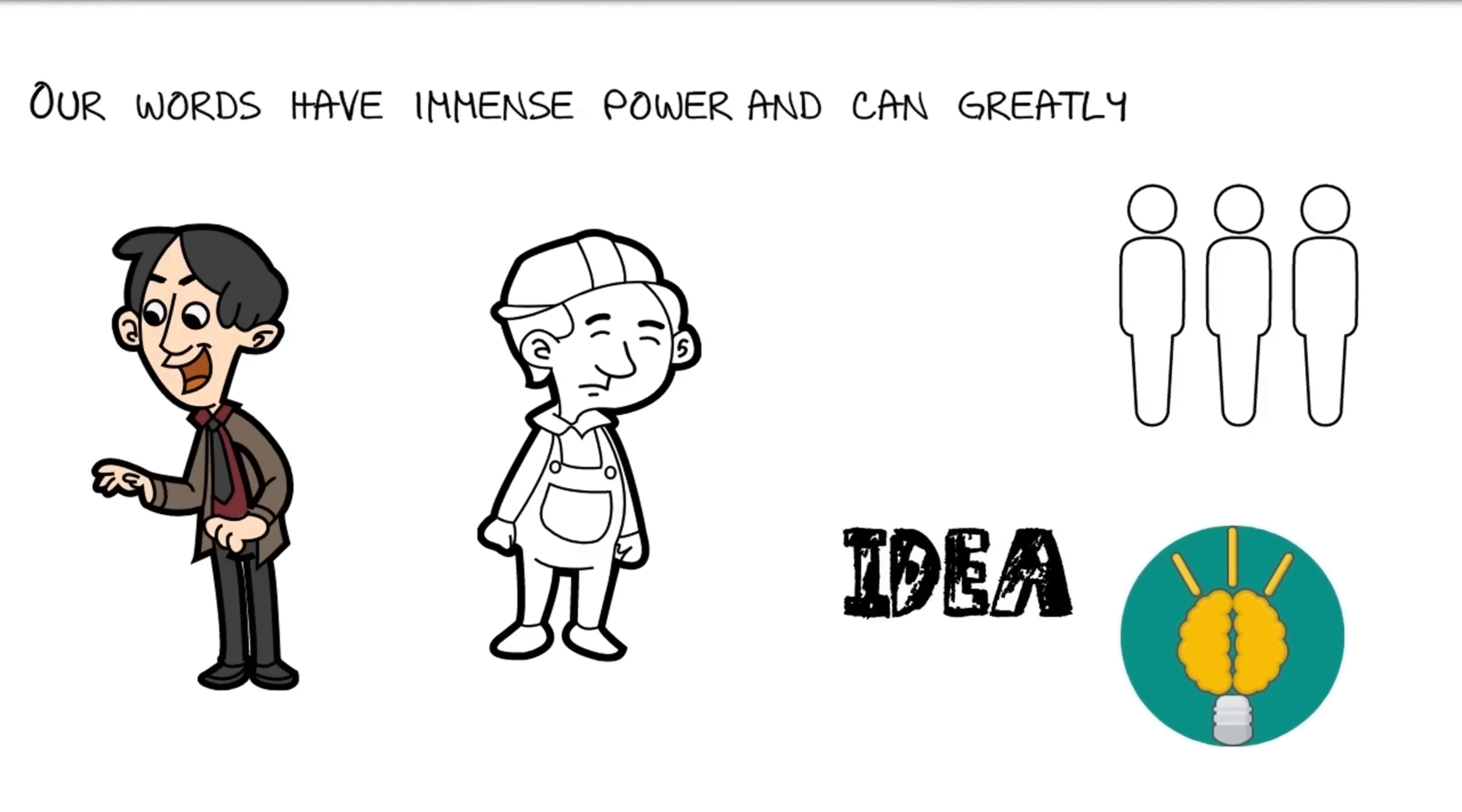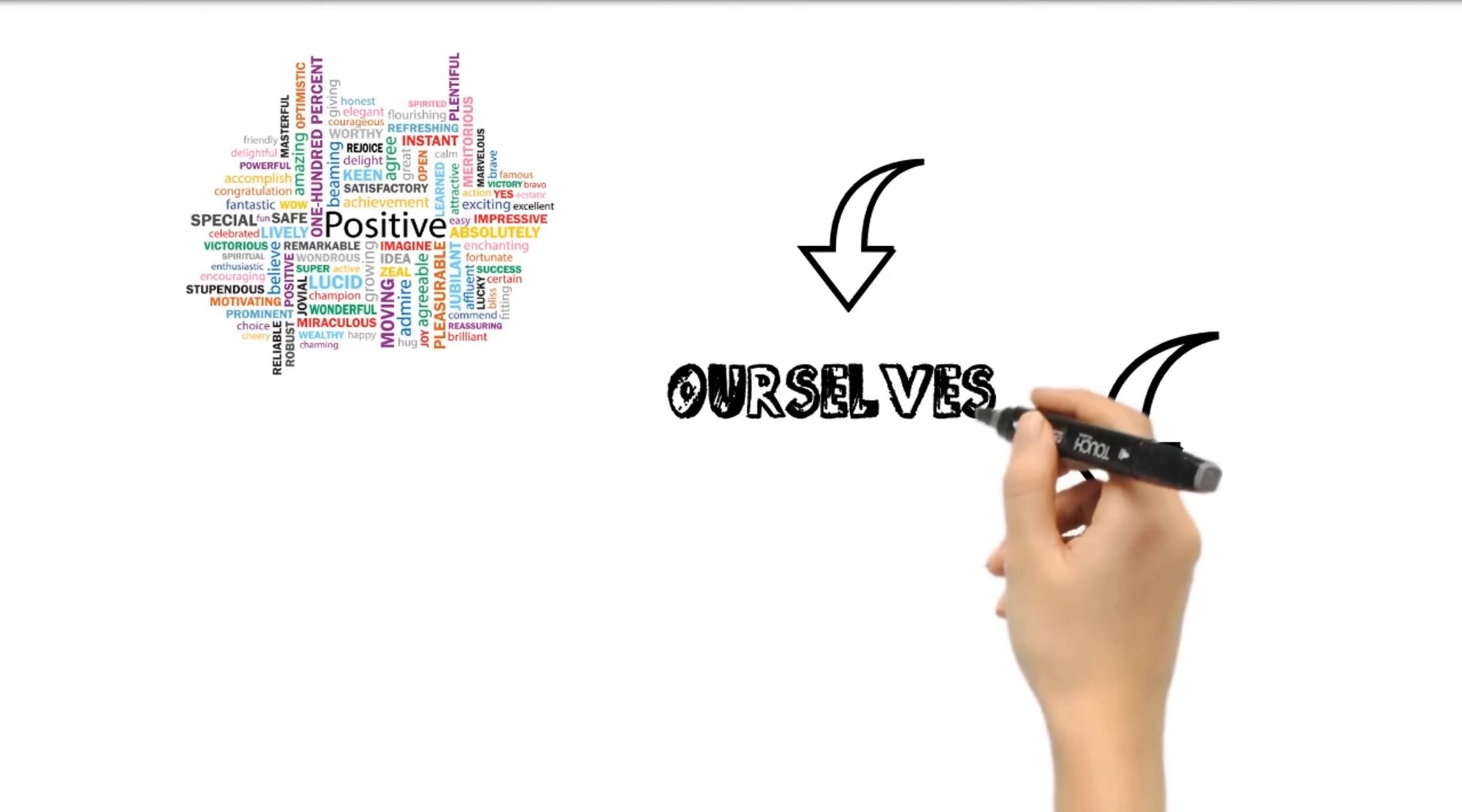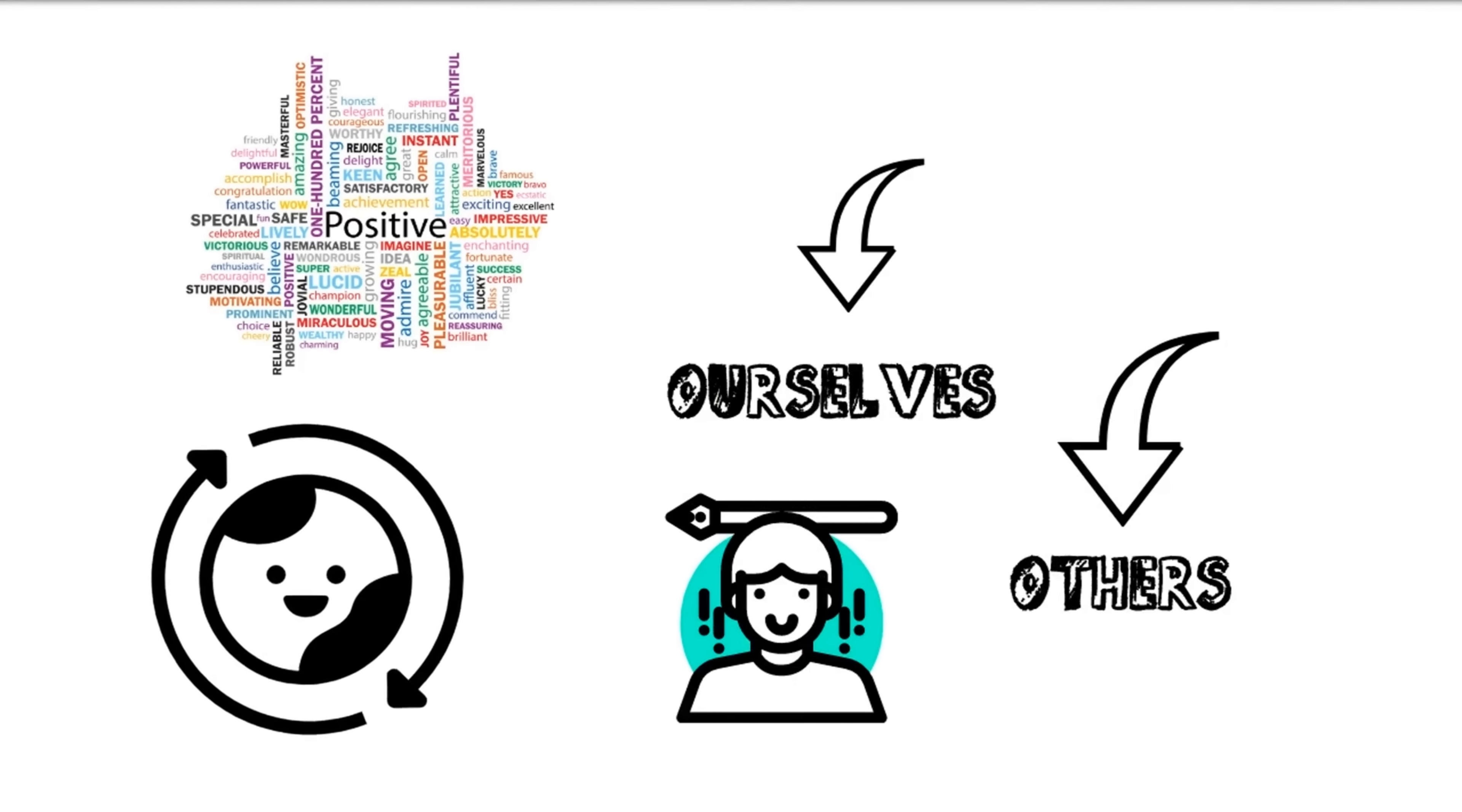Repetition is a powerful tool for imprinting thoughts and ideas in our minds, which can lead to the illusion of truth effect. Therefore, it's important to be mindful of the words we use, both when talking about ourselves and when talking about others. We should aim to avoid negative self-talk and gossip, and instead focus on positive affirmations and uplifting language. By doing so, we can create a more positive and loving environment for ourselves and those around us.